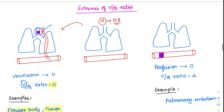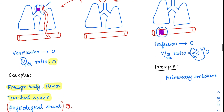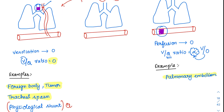Coming to the other extreme condition: completely obstructing perfusion. If perfusion is affected, the denominator becomes 0, and whenever the denominator is 0, the ratio becomes infinity. The best example for this infinity V/Q ratio is pulmonary embolism. Whenever there is a pulmonary embolism, the V/Q ratio is infinity. All these are important MCQ points.